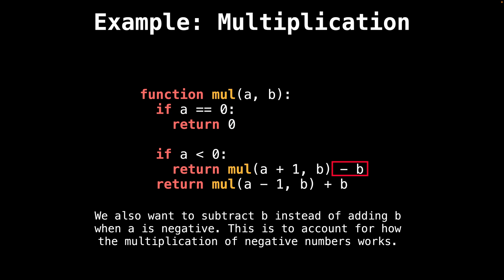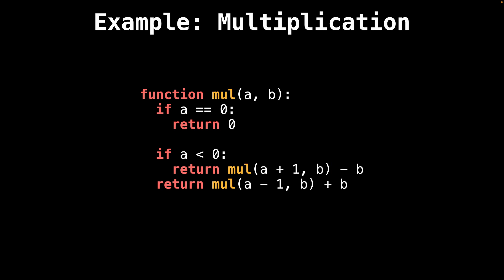We also want to subtract b instead of adding b because of how multiplication works. If a is negative and b is positive, we want a negative result. But if both numbers are negative, we want a positive result. So this is why we're subtracting b here. And when you put it all together, we get a function that can take the product of two numbers.